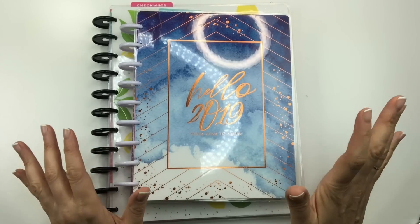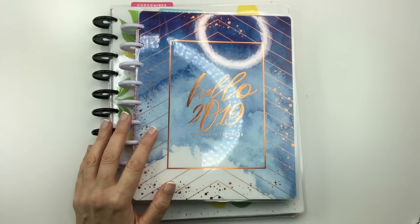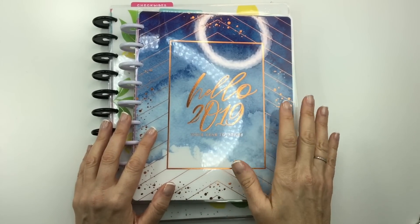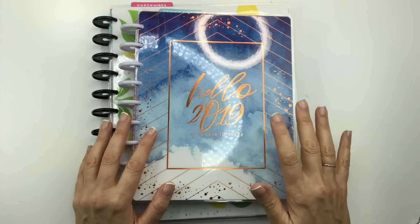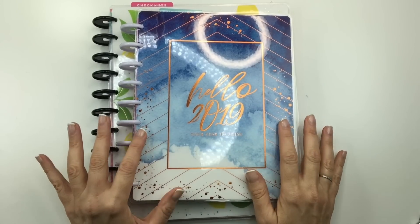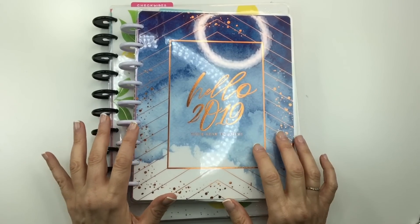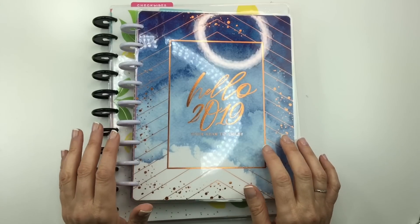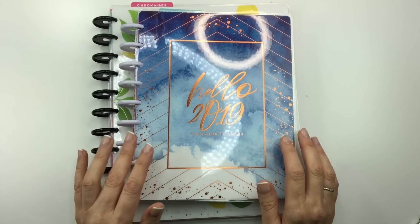Now, obviously you need a planner. That's number one. Also, I'm not going over stickers or washi tape or sticky notes, like accessories for your planner. These are actually tools that you're going to use while you are planning. So let's get started.